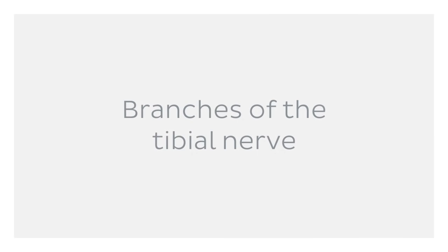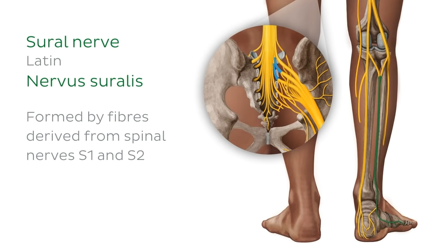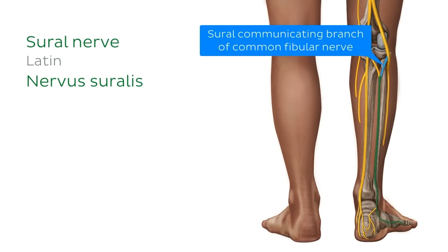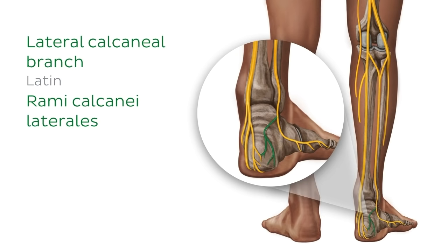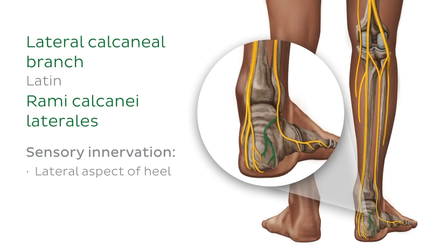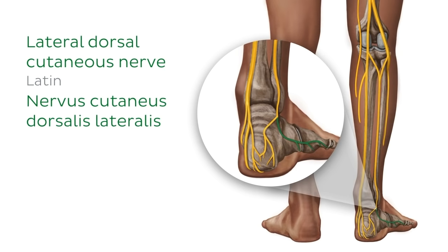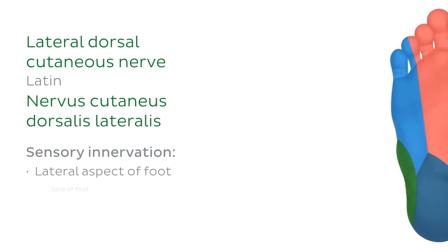Let's have a look at some terminal branches of the tibial nerve, starting with the sural nerve, which is formed by fibres derived from spinal nerves S1 and S2. The sural nerve descends down the leg and is joined at a variable level by the sural communicating branch of the common fibular nerve. This nerve provides sensory innervation to the lower posterolateral aspect of the leg and foot. We can see two branches of the sural nerve: the lateral calcaneal branch, which provides sensory innervation to the lateral aspect of the heel, and the lateral dorsal cutaneous nerve, which provides sensory innervation to the lateral aspect of the foot.